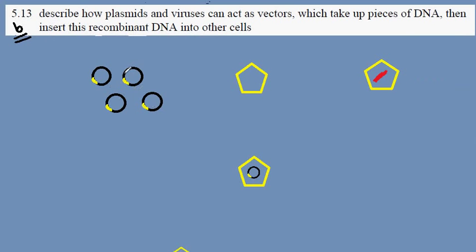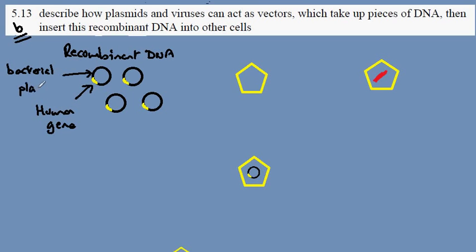In 5.13a we saw the formation of these structures here, which is recombinant DNA. This is a mixture of here the human gene and here the bacterial plasmid. Now it is necessary to transfer this structure into the host cell.